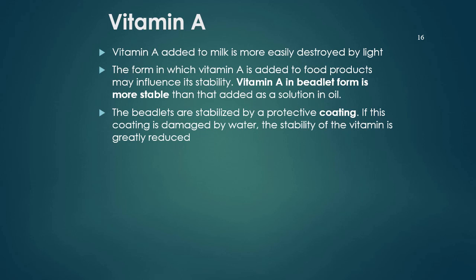Vitamin A in beadlet form is more stable than that added as a solution in oil, because the beadlets are stabilized by a protective coating. If this coating is damaged by water, the stability of the vitamin is greatly reduced. So compared to oil form, vitamin A in beadlet form is more stable. However, if the protective coating is damaged by water, the vitamin will also become unstable. That's the end of this video; the discussion of vitamin D will continue in the next video.